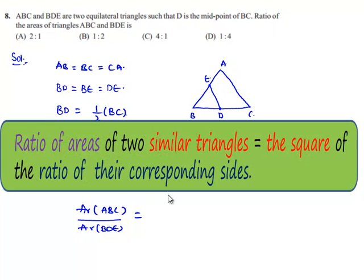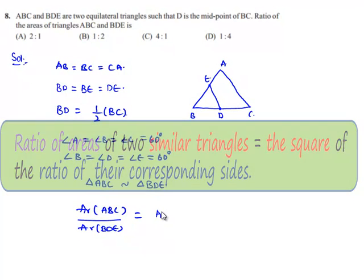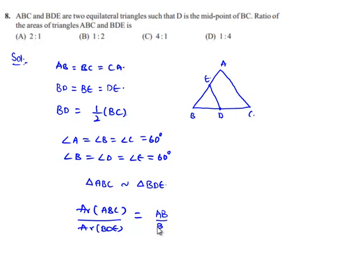We know that when two triangles are similar, then the ratio of area of both triangles will be equal to the ratio of square of the corresponding sides. That is here, corresponding sides are AB by BD whole square.